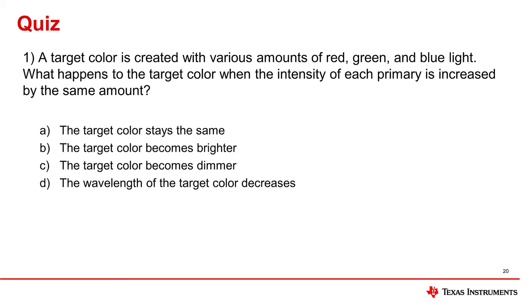A target color is created with various amounts of red, green, and blue light. What happens to the target color when the intensity of each primary is increased by the same amount? B. In RGB color matching, if all three primaries are increased by equal amounts, the resulting target color will stay the same, but become brighter.